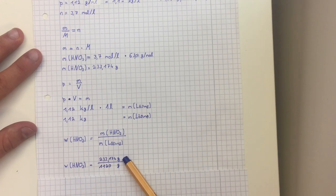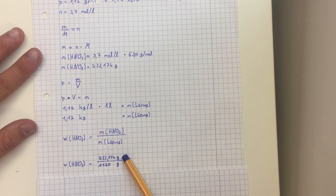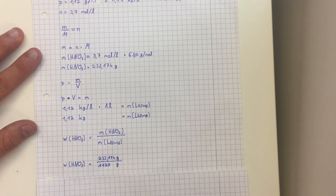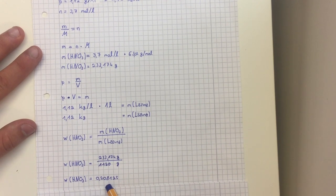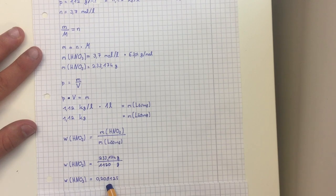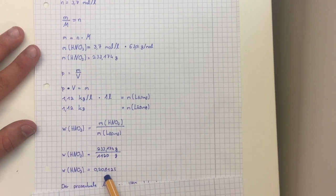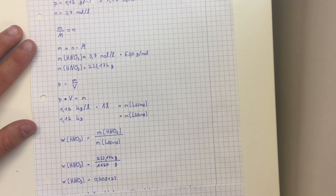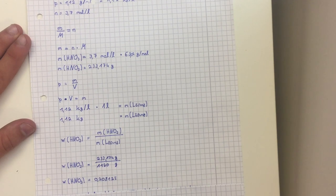We take the mass of HNO3 in the solution and divide it by the mass of the whole solution. Then we get the mass percent at about 21 percent. Exactly, it's 20.81 percent.